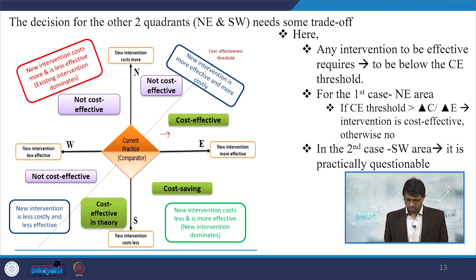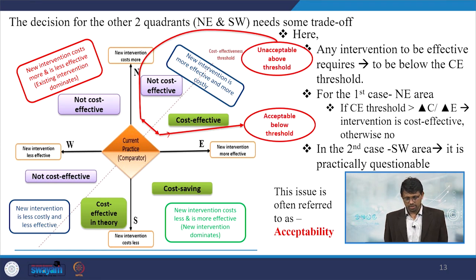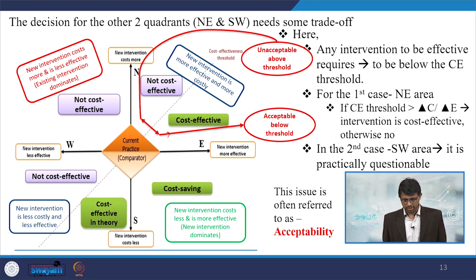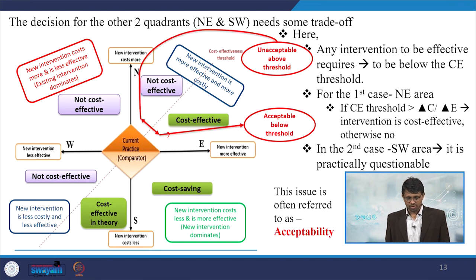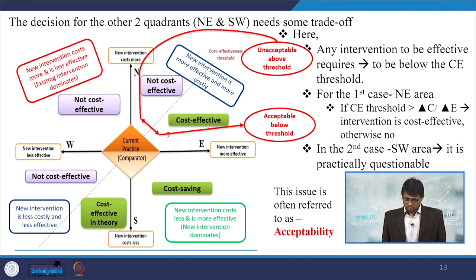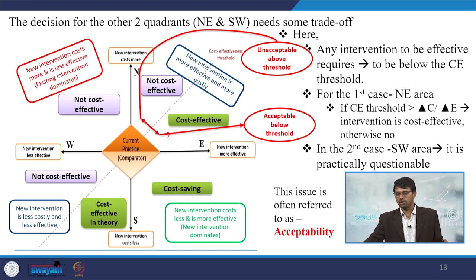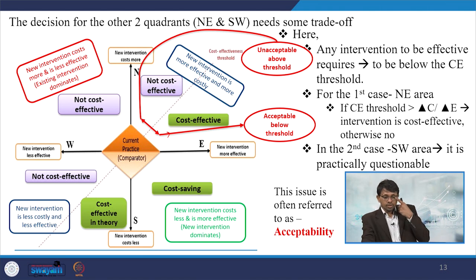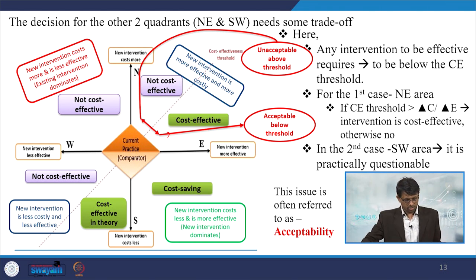In the case of the southwest area, it is practically questionable. We have highlighted what is acceptable and what is not acceptable. Above the threshold is non-acceptable. This diagram is often referred to as the acceptability diagram, which clearly identifies the condition across all four quadrants. We then divide the conflicting northeast and southwest regions further using the cost-effectiveness threshold level.